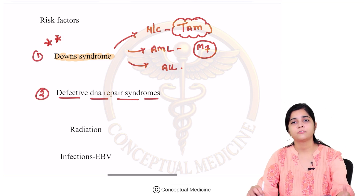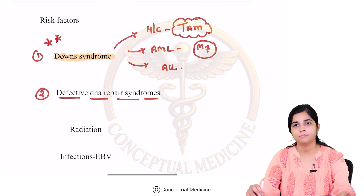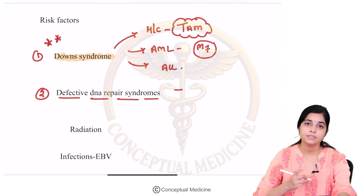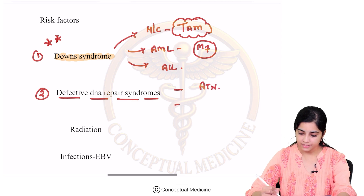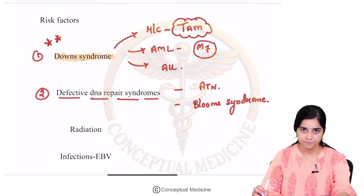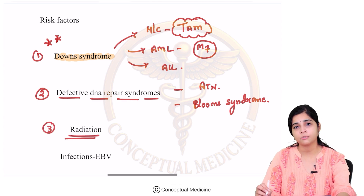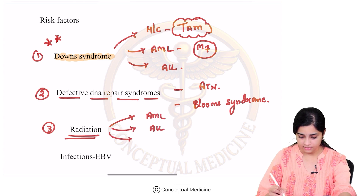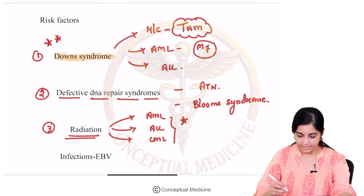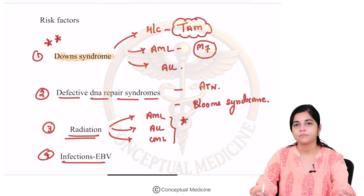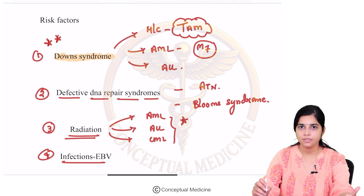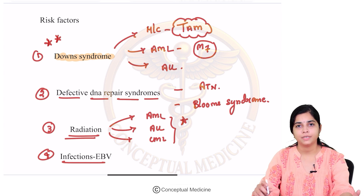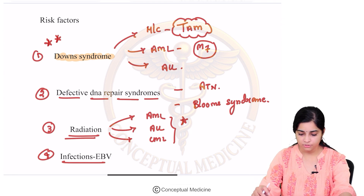Second, disorders associated with defective DNA repair can also be associated with ALL — this includes Ataxia Telangiectasia and Bloom's syndrome. Third, radiation exposure is associated with AML, ALL, and CML. Fourth, certain infections like EBV have been shown in association with certain forms of ALL, though not definitively proven.